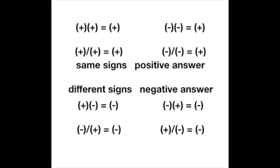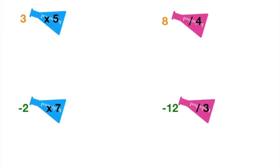Going through the story for multiplication gets more at the heart of what's actually happening when we multiply by negative numbers. If you're getting right answers, you can use either the rules or the story. The key is being able to get right answers without a calculator when given simple numbers. Within this story, multiplication and division are fundamentally different from addition and subtraction.